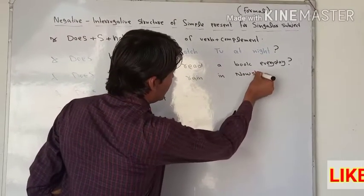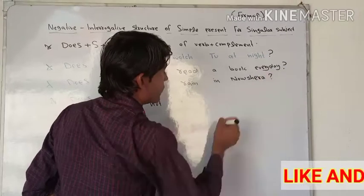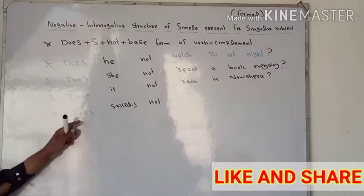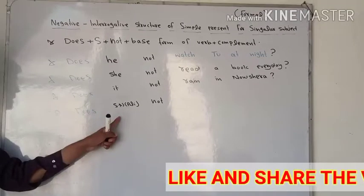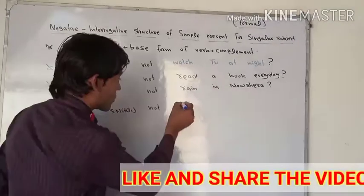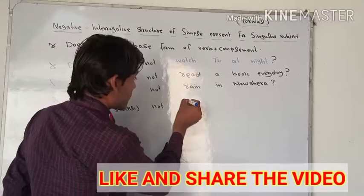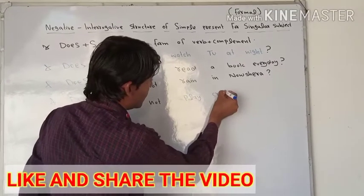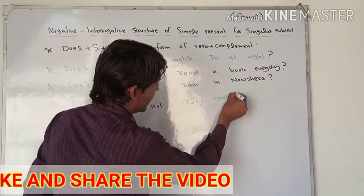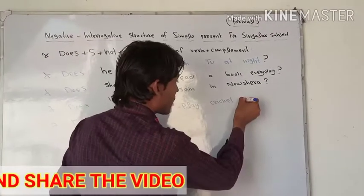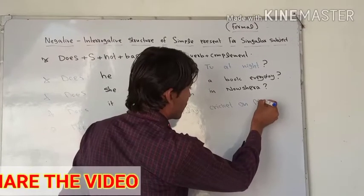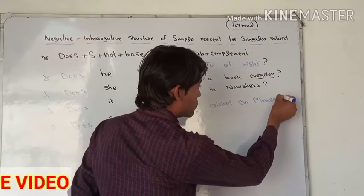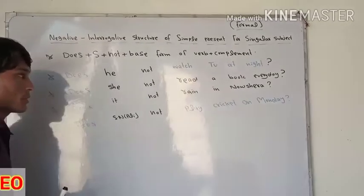For a singular noun example: 'Does Ali play cricket on Sunday?' At the end we add a sign of interrogation — a question mark.